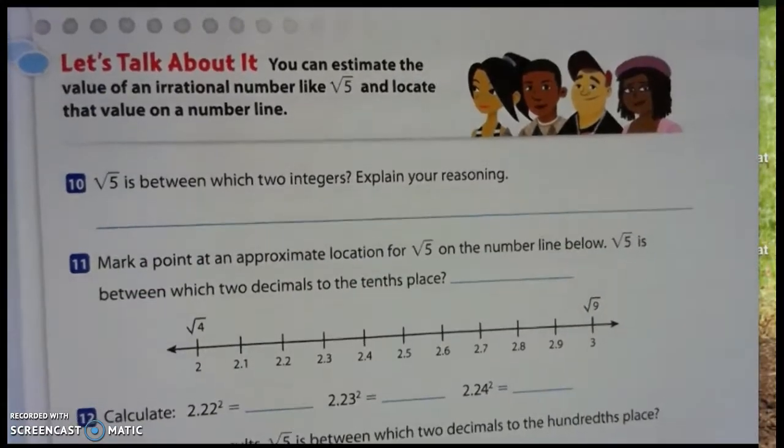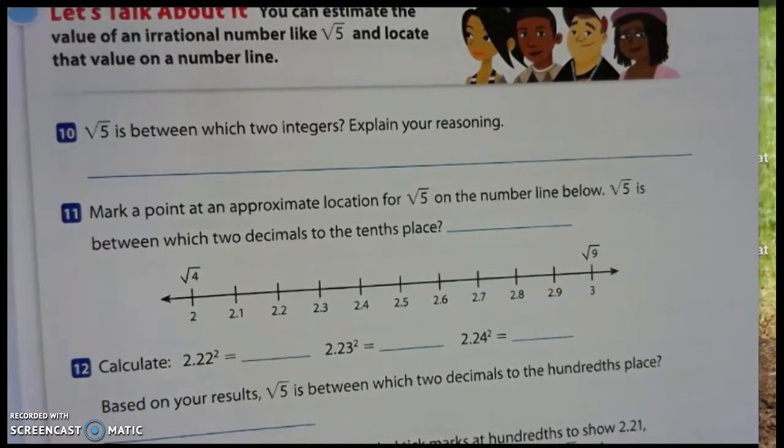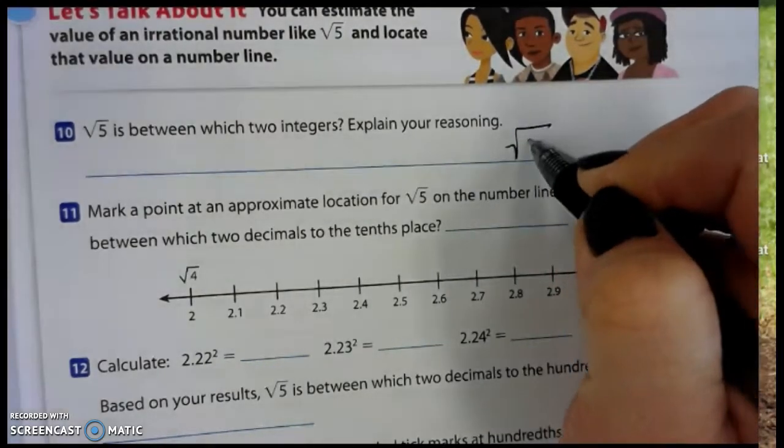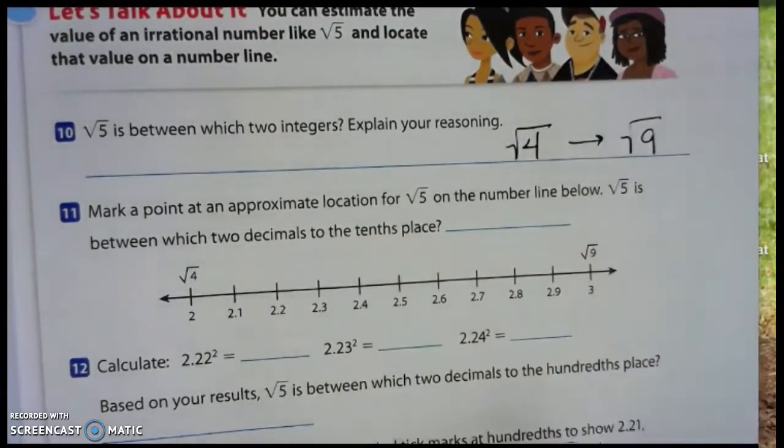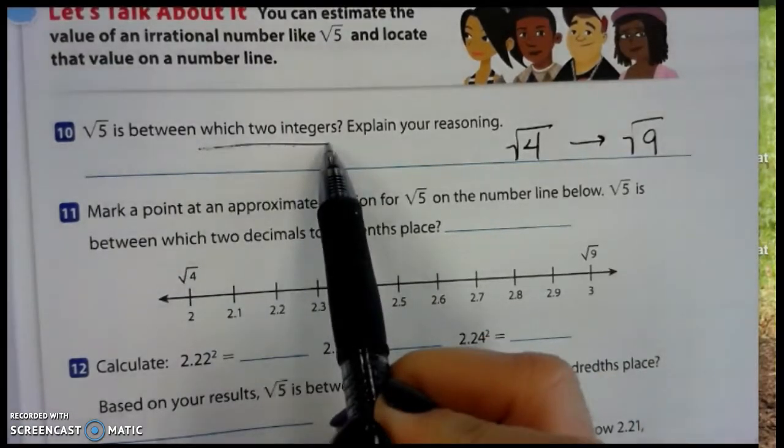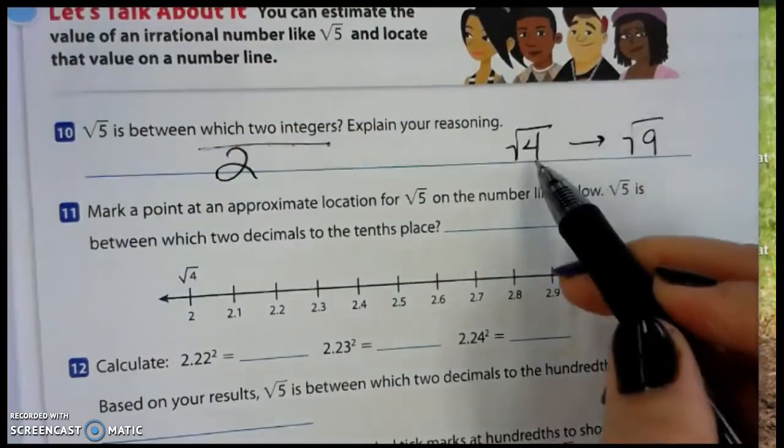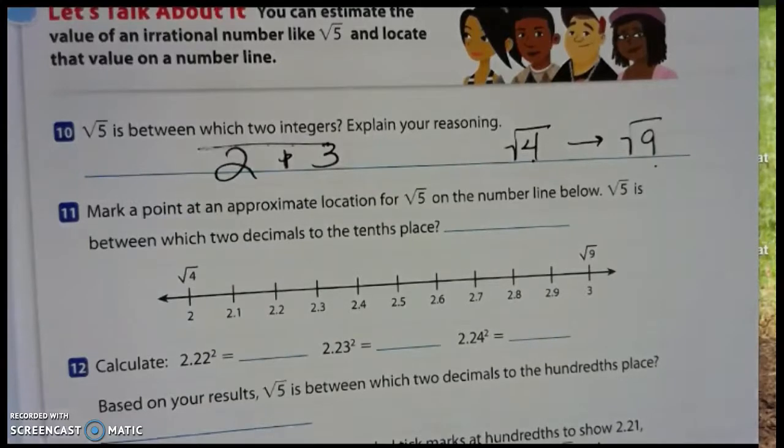All right, we've got another one of these they want us to estimate. The square root of 5 is between which two integers? I want you to think of your perfect squares. The square root of 4 is below it, and the square root of 9 is above it. The square root of 5 is between the square root of 4 and the square root of 9. When they say which two integers, that would be between 2, which is the square root of 4, and 3, which is the square root of 9. So we would know that the square root of 5 has to be 2 point something.